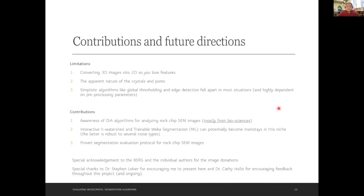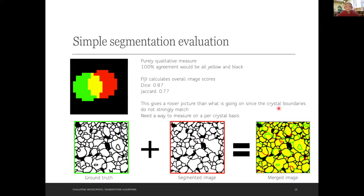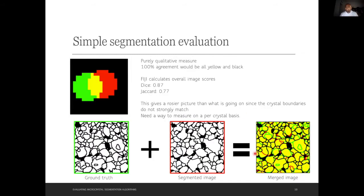Question about the slide showing ground truth and segmentation — can you explain the details? The green channel shows where I ground-truthed but the computer didn't pick it up, so it definitely didn't pick up all the crystals. In the red you can see where it over-segmented. This is purely a visual comparison and not accurate, because pixel overlap alone isn't sufficient — you need object overlap, matching similar crystals together, which is what we propose.